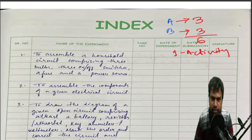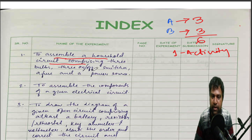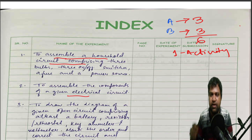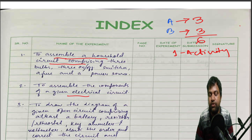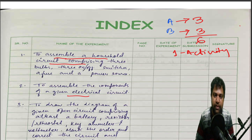As you can see, these are the index entries — 'assemble the household circuit' and 'assemble the components of a given electrical circuit' — these are activities from Section A. There are at least seven or eight activities listed, so you see which activities are suitable for you, which you can do easily, and what apparatus are available in your lab. Discuss with your teacher so it will be easy.